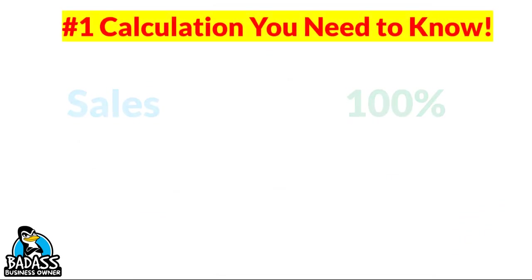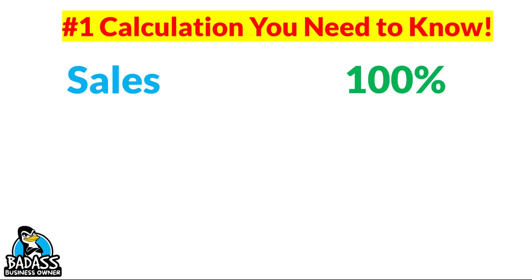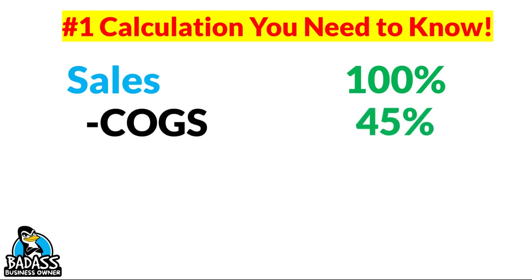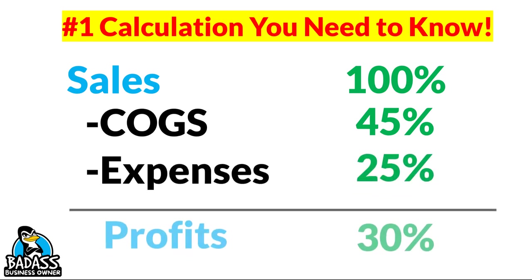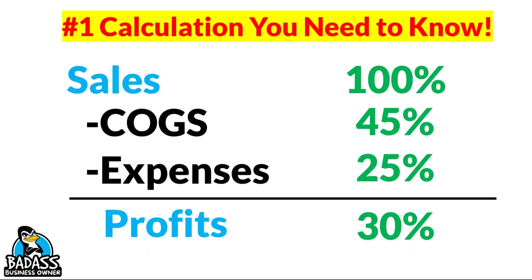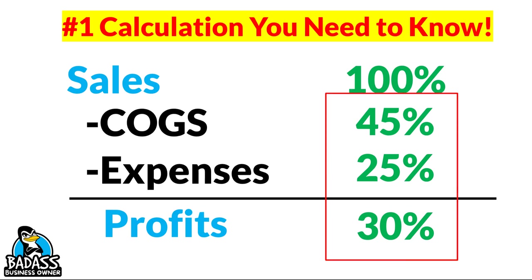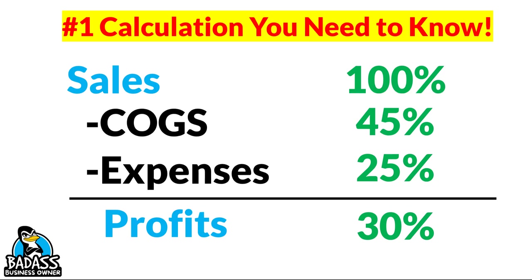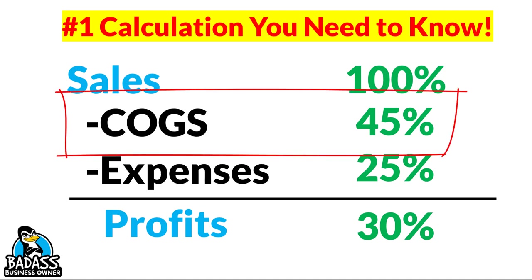Sales are always 100% — every dollar that comes in, your top line is always 100%. Your cost of goods is a percentage of that 100%. In this P&L example, it's 45%, expenses are running 25%, for a healthy profit of 30%. Plug in your own numbers from your profit and loss. If profits are low — say 0% or 10% — you can adjust. As long as the three numbers add up to 100%, you can say: I want to bring my cost of goods down 5% and raise profits 5%. Whatever your goal is, use those numbers, because what we care about is your cost of goods line.